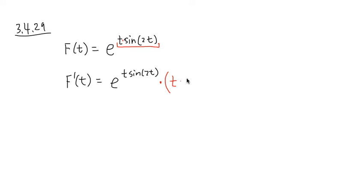Derivative of sine is going to be cosine, and the inside right here stays the same. So you first get cosine of 2t. And then you have to go inside right here and multiply by the derivative of inside. Derivative of 2t is equal to 2.